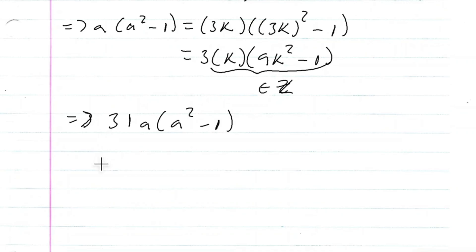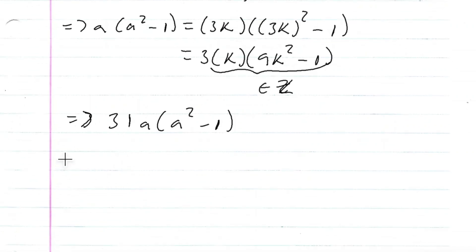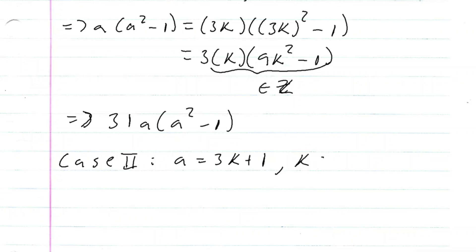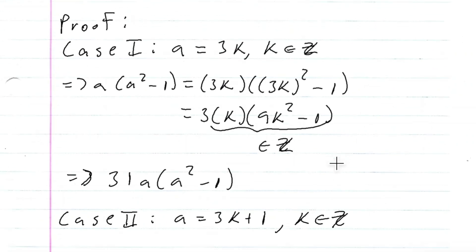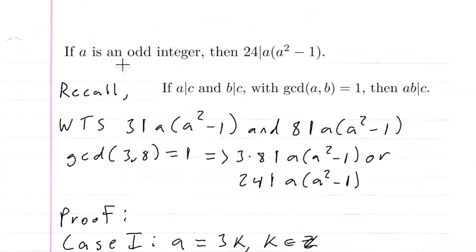Now I have to do two more cases because A could be odd or even. For Case 2, we let A equal to 3K plus 1, which can also be odd or even. Using the division algorithm, we have to do all the cases for A since it could be odd or even. This odd integer condition will come into play when we try to prove that 8 divides A times A squared minus 1.